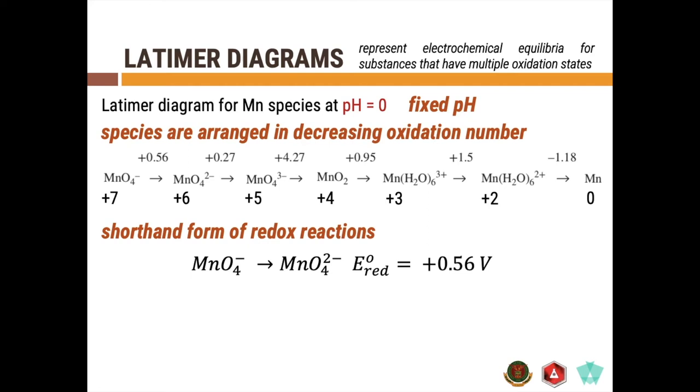So, essentially, these are shorthand forms of your redox reactions. For example, if you have your MnO4 minus plus electron to produce your MnO4 2 minus, then it has a standard reduction potential of plus 0.56 volt, which is this one. And using the Latimer diagram, you can predict some redox behavior of a given substance.